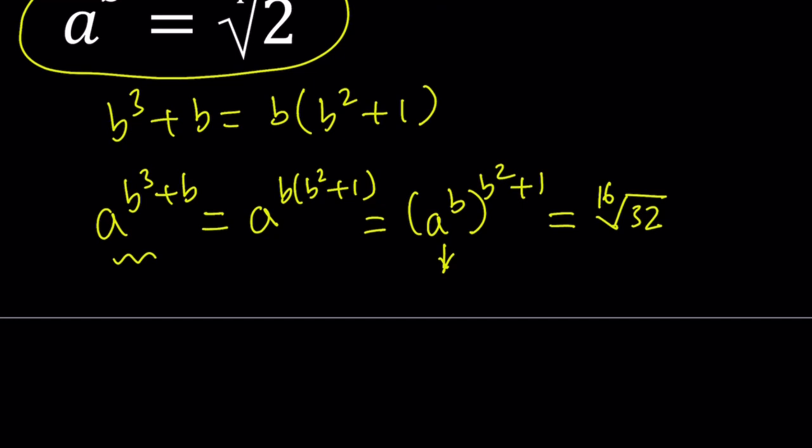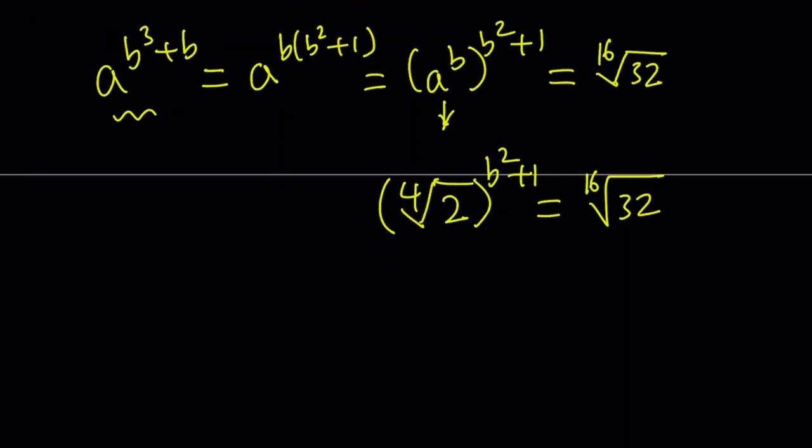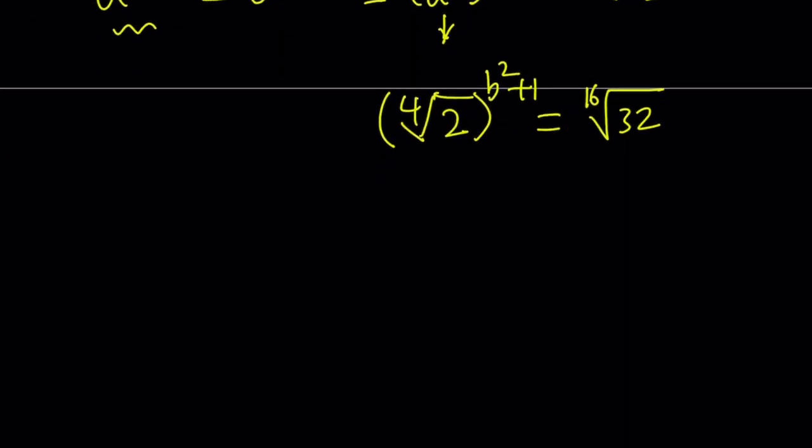Let's go ahead and do it. Replace a to the power b with the 4th root of 2, raise it to the power b squared plus 1, and then set it equal to the 16th root of 32. And the rest should be easy, right? But let's go ahead and go through the steps.